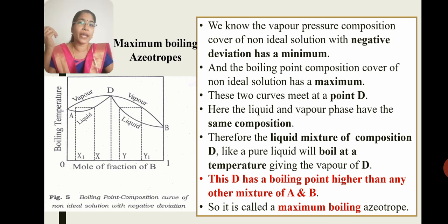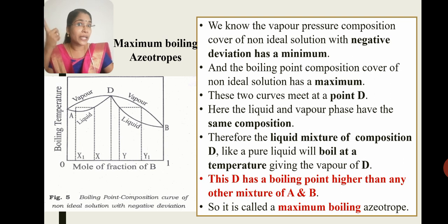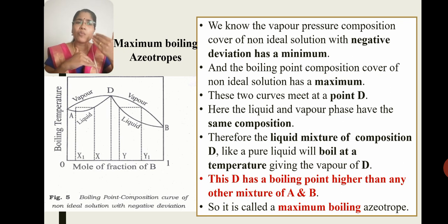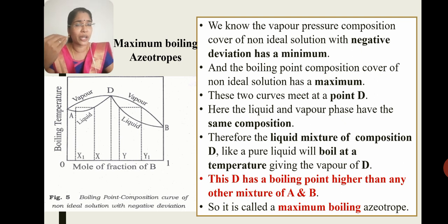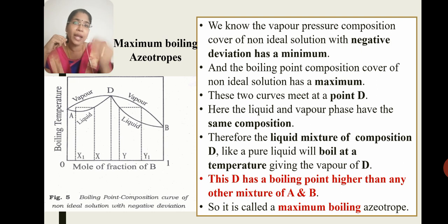Now let's look at the vapor-temperature curve against mole fraction graph. We call it a negative deviation. The vapor pressure composition curve of a non-ideal solution with negative deviation has a minimum point, and the boiling point composition curve of the non-ideal solution has a maximum.